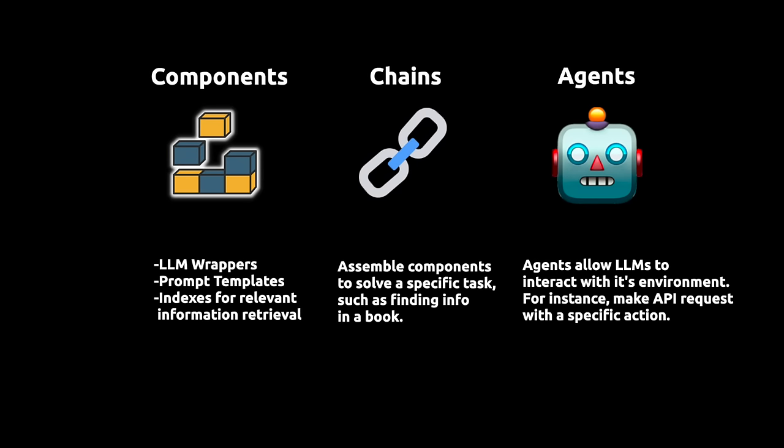The main value proposition of LangChain can be divided into three main concepts. We have LLM wrappers that allow us to connect to large language models like GPT-4 or the ones from HuggingFace. Prompt templates allow us to avoid having to hard-code text, which is the input to the LLMs. Then we have indexes that allow us to extract relevant information for the LLMs. Chains allow us to combine multiple components together to solve a specific task and build an entire LLM application. And finally, we have agents that allow the LLM to interact with external APIs.